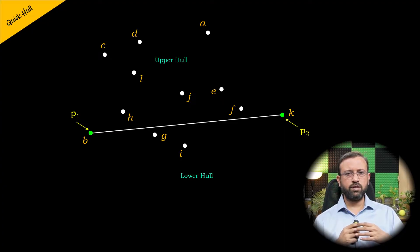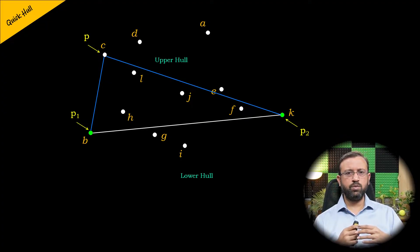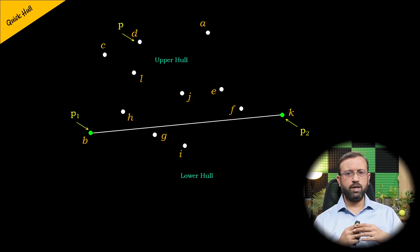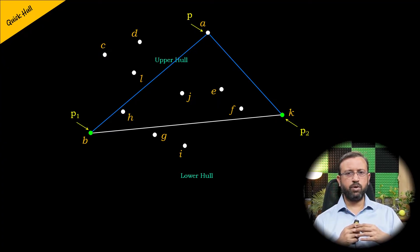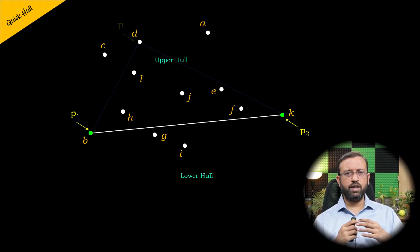To compute the convex hull for the upper hull, we select a point P from the points in the upper hull. Let us consider point C as point P — the area formed by points P1, P2, and P is computed. In the same way, we select point D as point P and compute the area formed by P1, P2, and P. Then we select point A as point P and compute the area formed by P1, P2, and P. We then choose the point P with the largest area. Let us say point D has the largest area among the points in the upper hull.